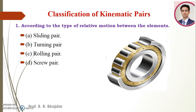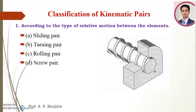Fourth: the screw pair. When the two elements of a pair are connected in such a way that one element can turn about the other by screw thread, the pair is known as the screw pair. An example is the lead screw with a nut — the nut turns and moves along the screw. That is the example of the screw pair.